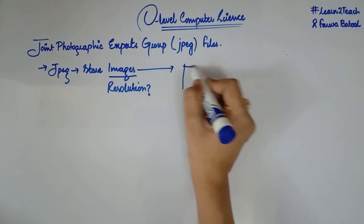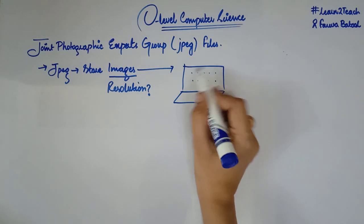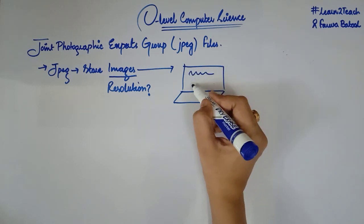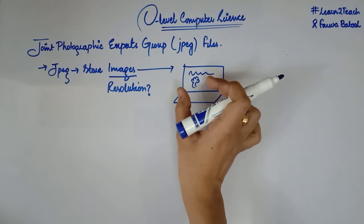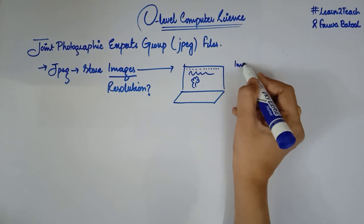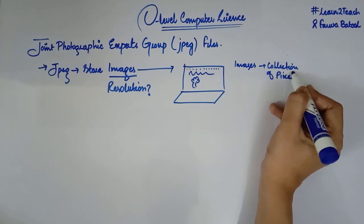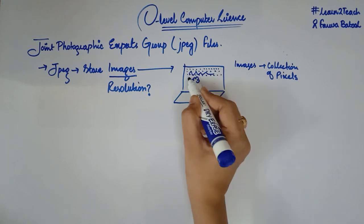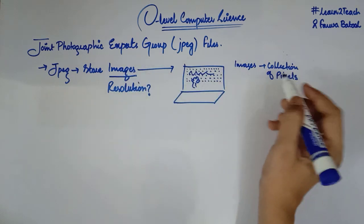Let's suppose there is an image being displayed on a computer screen. Whenever you see an image on a computer screen, it is basically the pixels that you are watching, because an image is nothing but a collection of pixels organized in the form of rows and columns. That arrangement of pixels makes up an image.